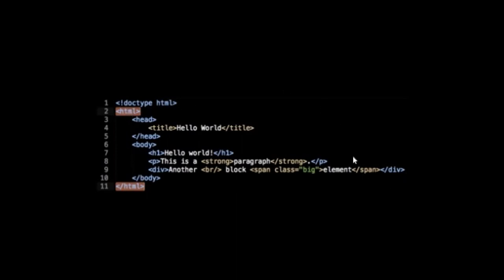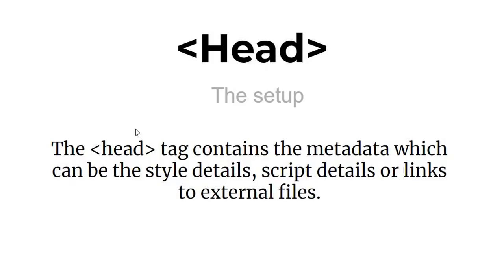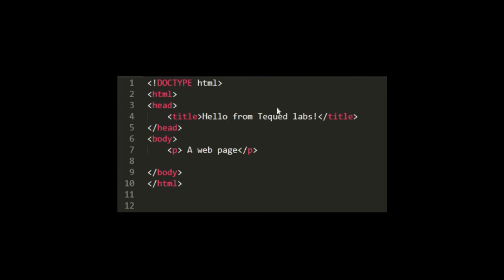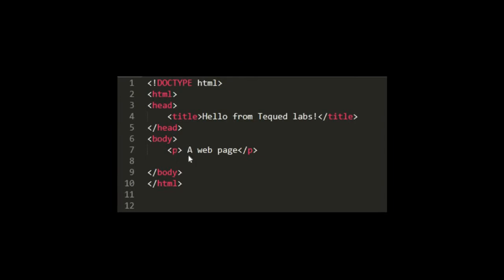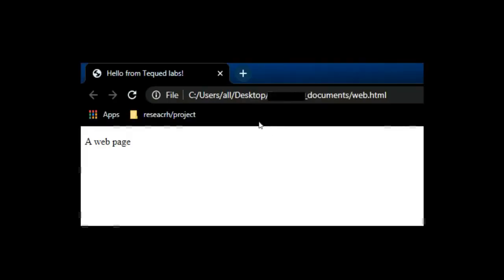The head tag contains metadata including style details, script details, and links to external stylesheets. For example, inside the head tag you place the title tag — the title 'Hello from Tech Web Labs' will appear as the page title in the browser tab. The head tag is closed with a forward slash followed by head.